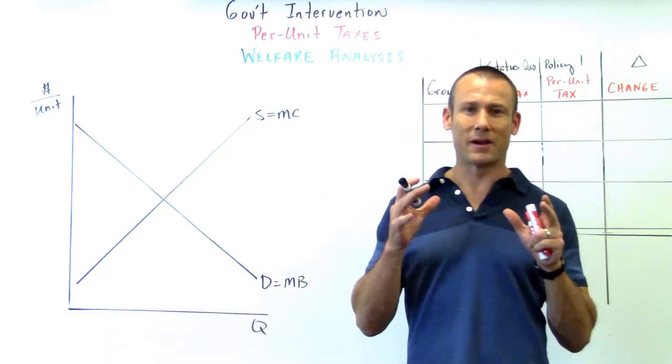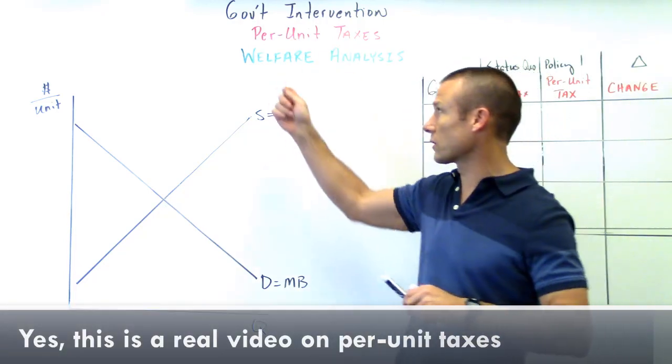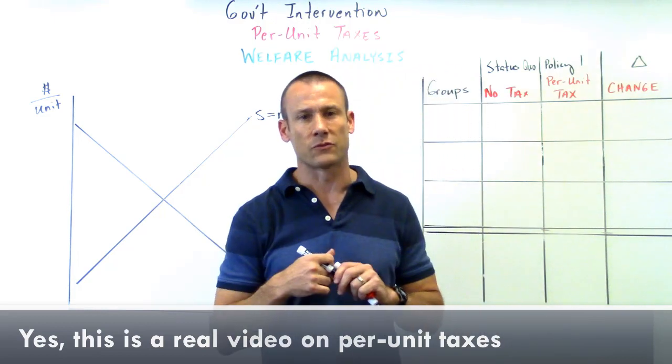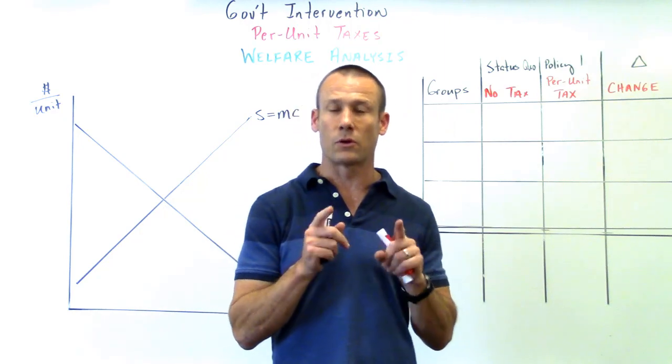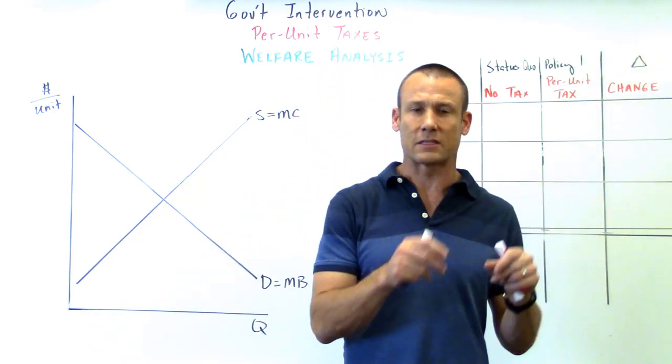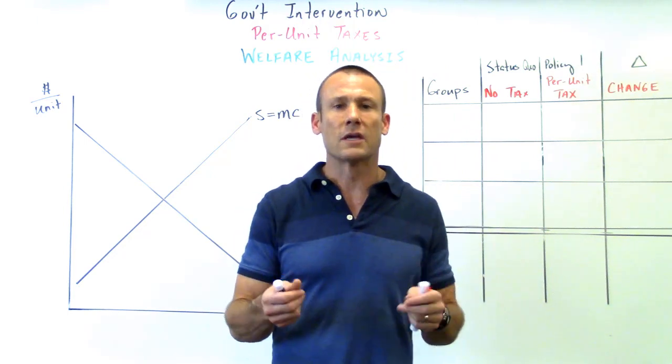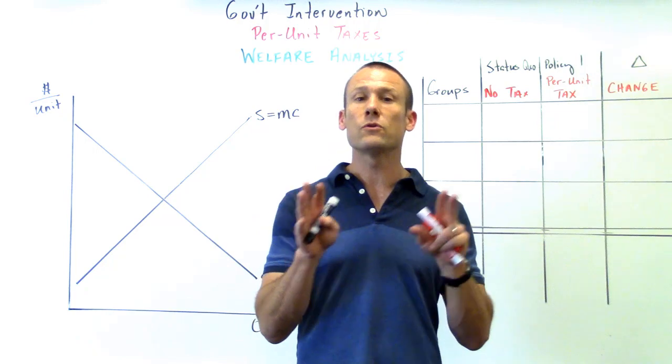Welcome back, we are on government intervention per-unit taxes and we're going to do a welfare analysis. I'm going to cut to the end on this one. The per-unit tax that we impose, per-unit taxes cause deadweight loss - they hurt social surplus.